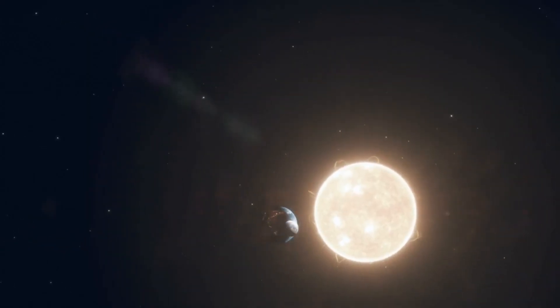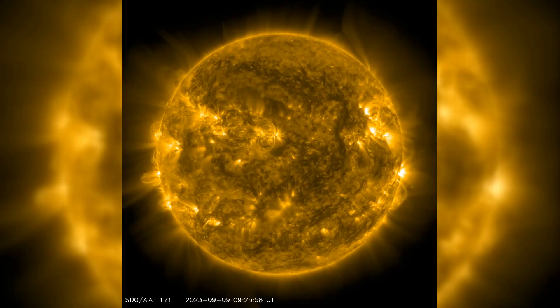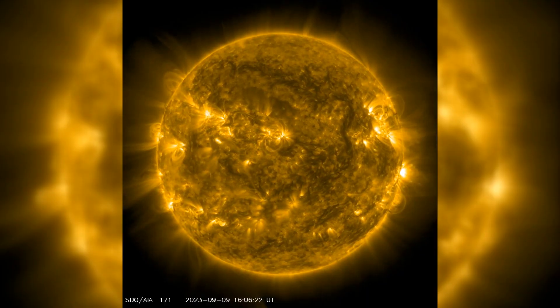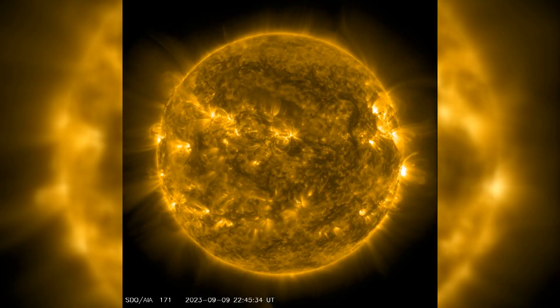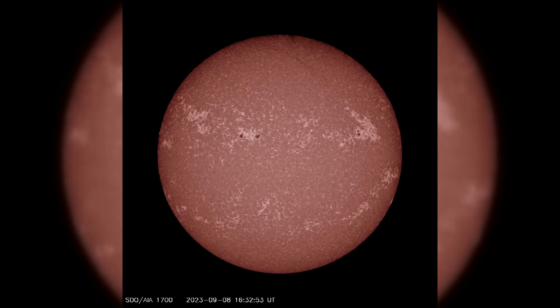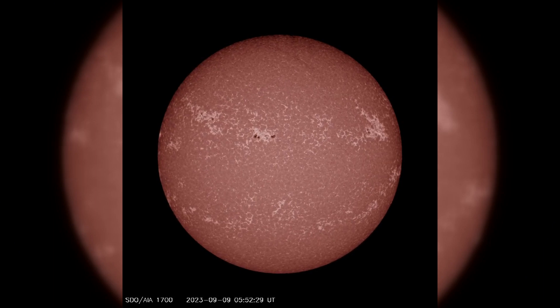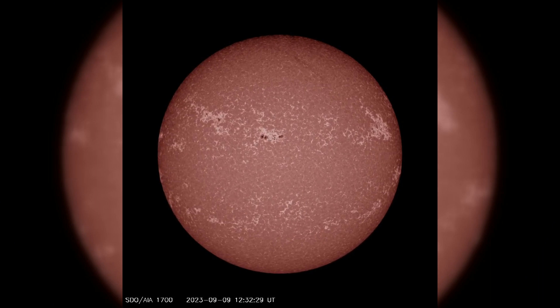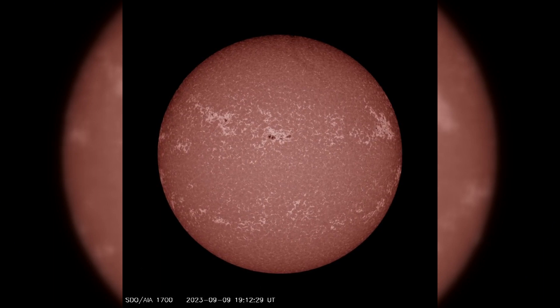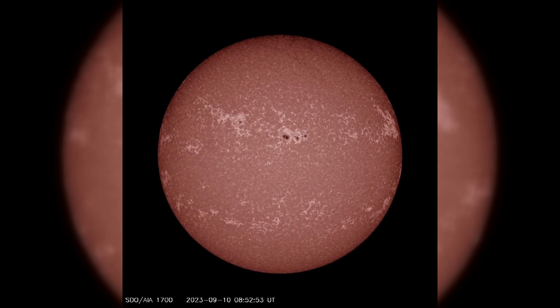In the last 24 hours, solar activity remained relatively low. The most significant event was a C8.3 solar flare originating from Region 3423. Some minor growth and consolidation were observed in Region 3423, but Regions 3421 and 3425 experienced slight decay.